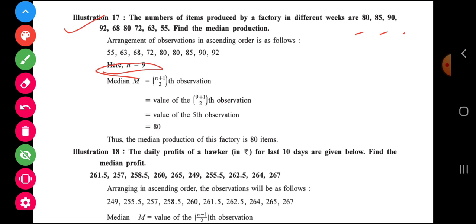Now if you arrange them in ascending order, the first will come the lowest value. Lowest value is 55. So 55 then start to start. 55, the hierarchy evaluation, 63, then 68, then 72, 80, 80 repeat, 85, 90 and 92. So total 9 observations are there.